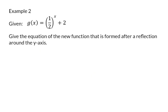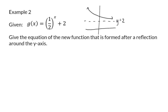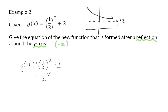Example two. Here we are given a decreasing exponential function that moved up two units. We are asked to give the new equation of the function that is formed after a reflection around the y-axis. A reflection around the y-axis means that x's sign has to change. So the new equation will now be g of minus x, which means on the right we need to change the sign of x. To now ensure that the equation is still in the standard form, we want the exponent to be a positive x, and using exponential laws, we will then have the equation two to the power of x plus two. So after the reflection around the y-axis, the decreasing exponential function will now be increasing.